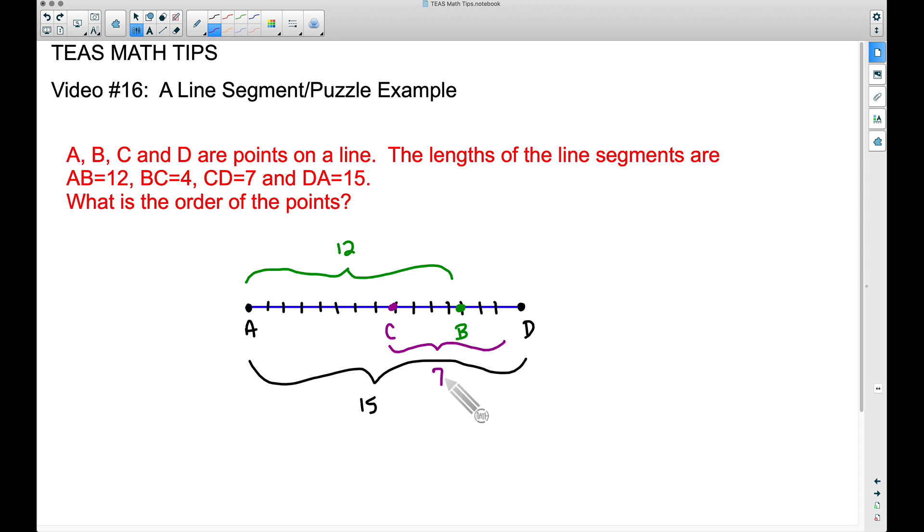Now the only one I'm missing here is BC equals four. And notice my pattern: I went through my longest pieces first, and I made a guess or an assumption that all of my other letters would be on the inside of the two points where we have the longest segment.